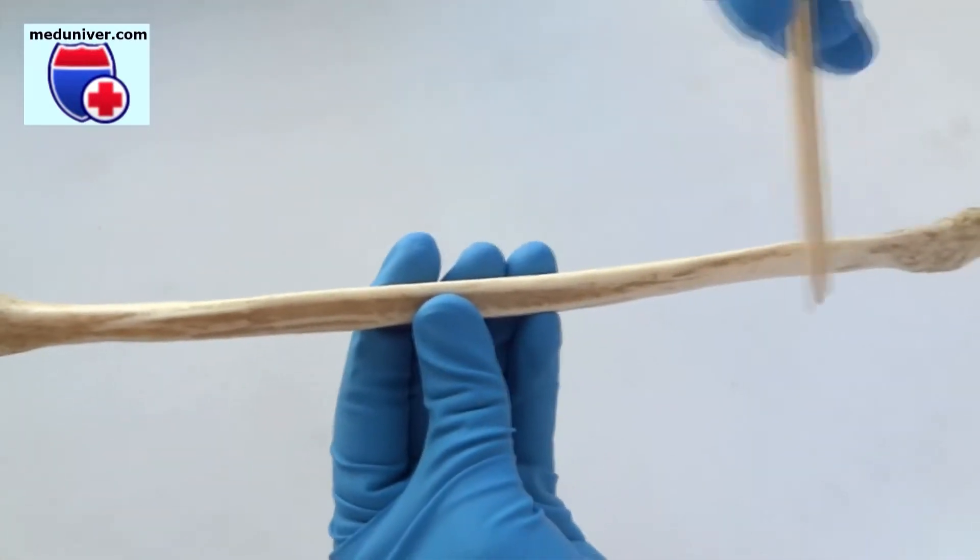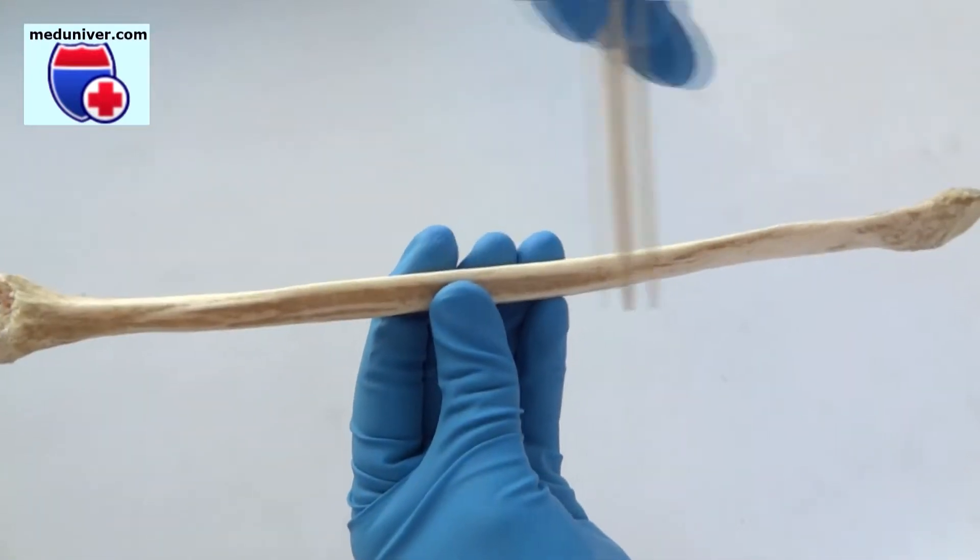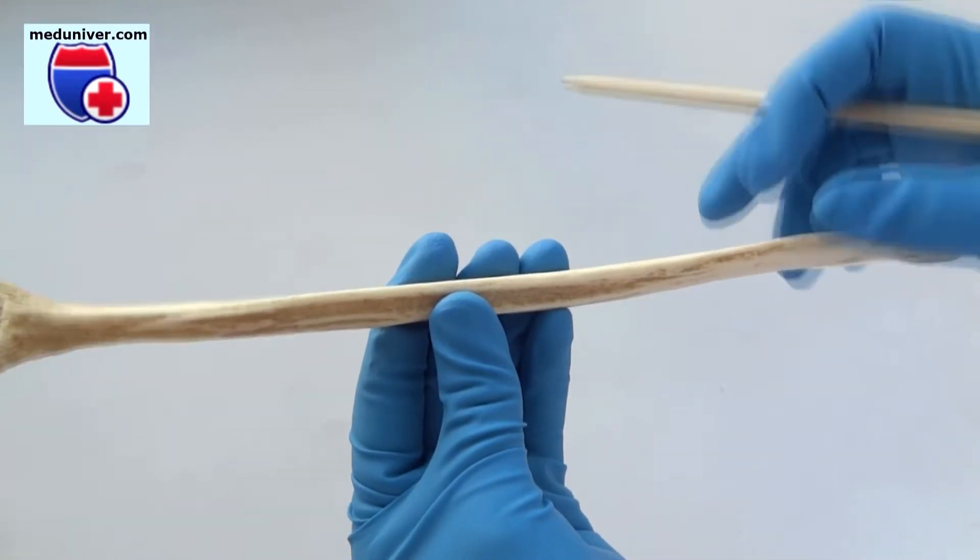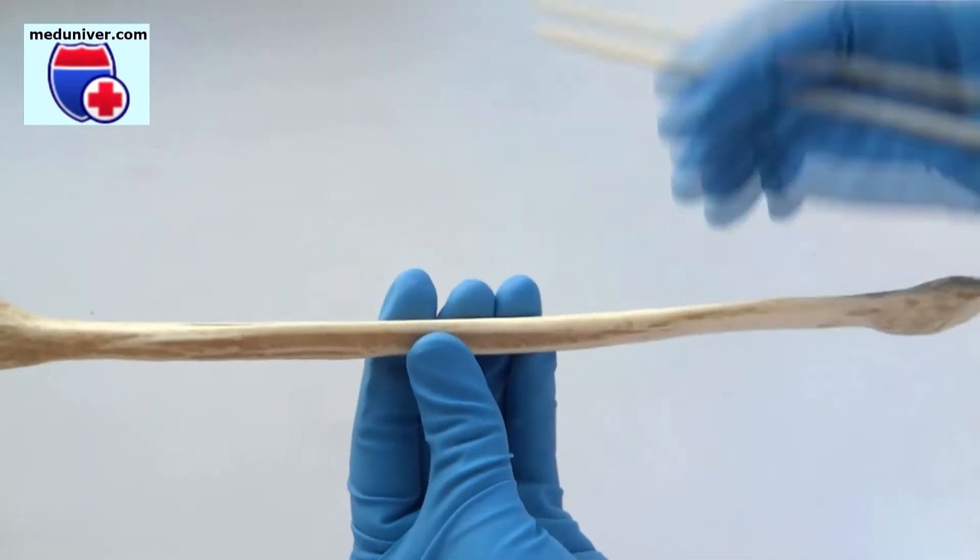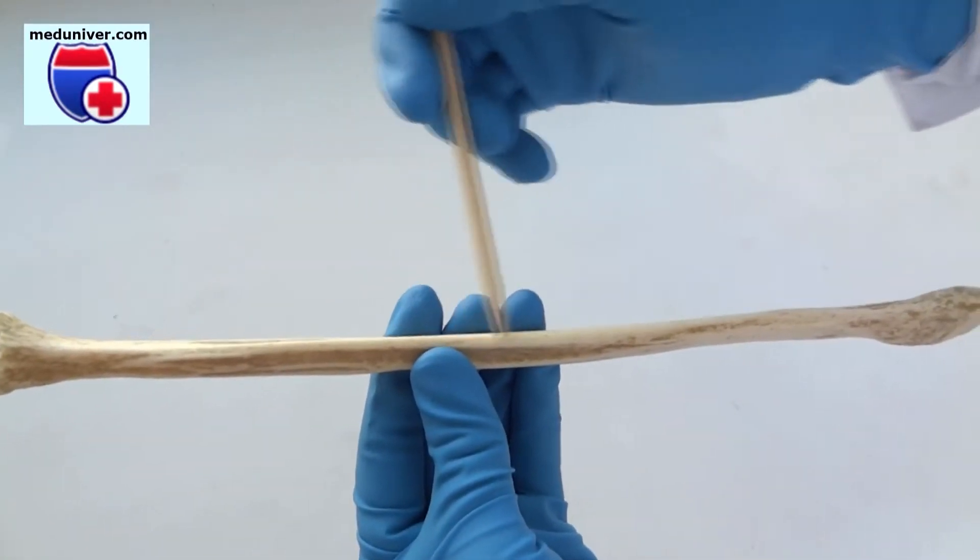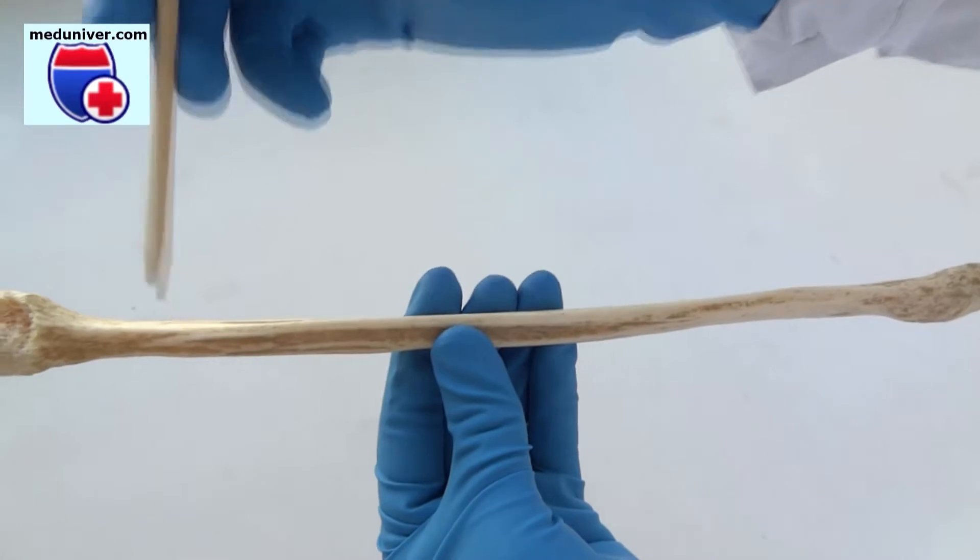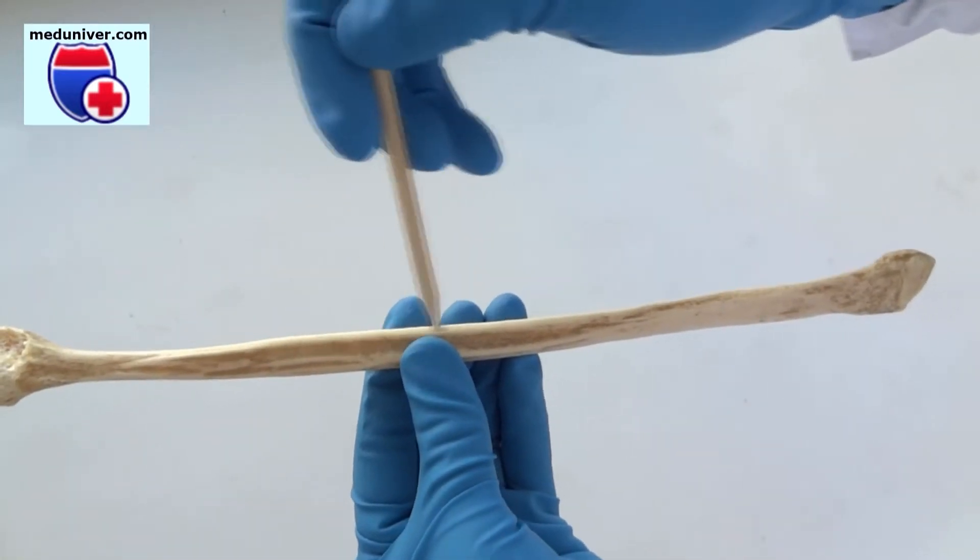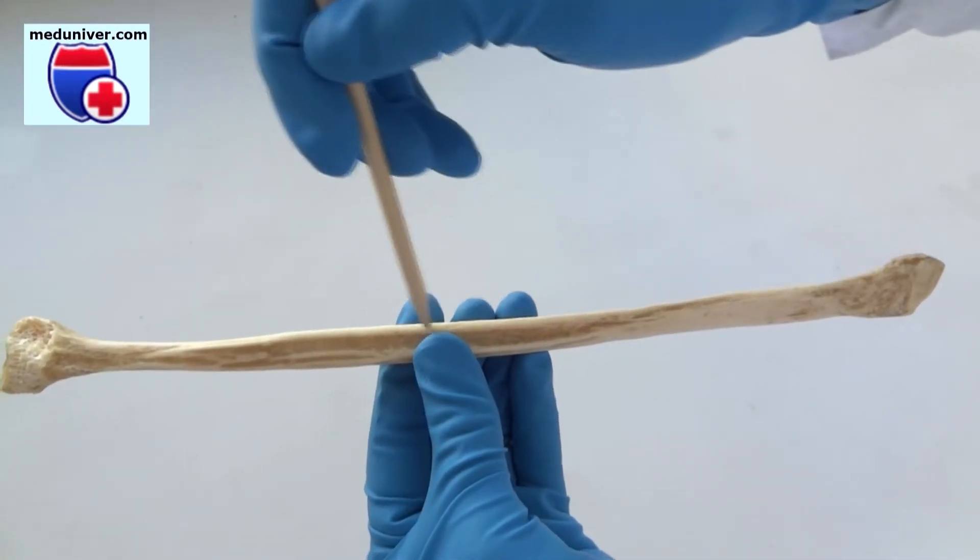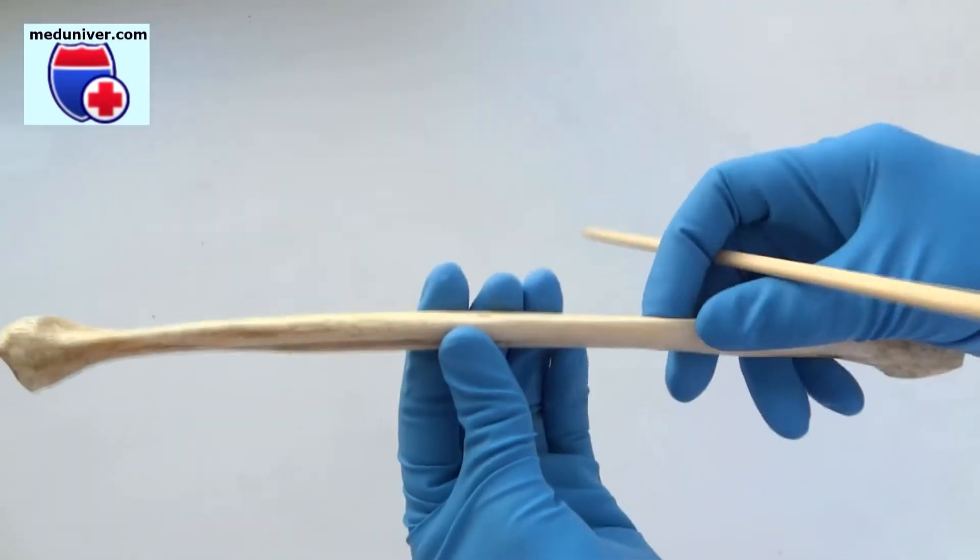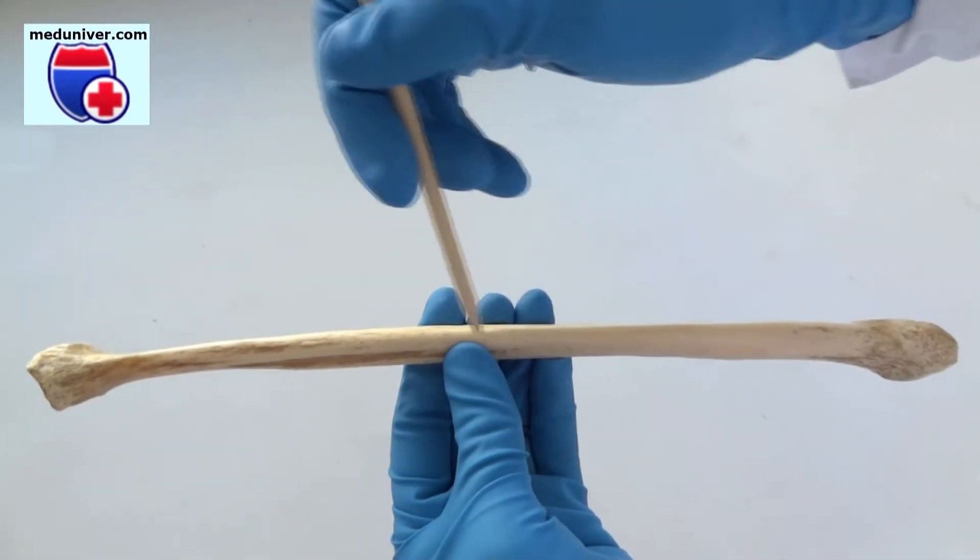Body of fibula, corpus fibulae, on which is located the anterior border of fibula, margo anterior, interosseous border of fibula, margo interosseus, and posterior border of fibula, margo posterior.